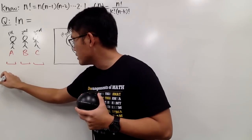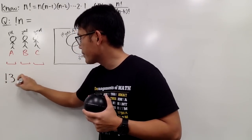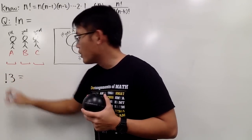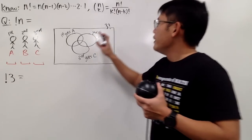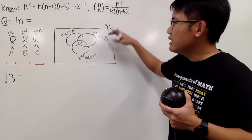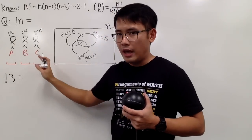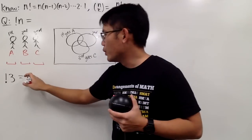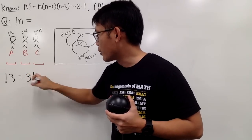So let's write it down: subfactorial of three. As we said, there will be a total of three factorial ways if you don't care about getting your own gift back. So we are going to begin with three factorial.